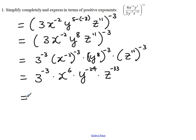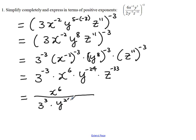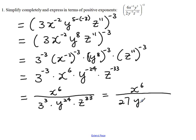Now we do have some negative exponents, and we cannot leave it like that — we have to take care of the negative exponents. x to the 6 stays the same since it's a positive exponent. 3 raised to the negative 3 gets moved to the denominator, becoming 3 cubed. y to the negative 24 also moves to the denominator, becoming 1 over y to the 24. Then we have z to the 33. And 3 cubed equals 27, giving us the final answer: x to the 6 over 27 times y to the 24 times z to the 33.